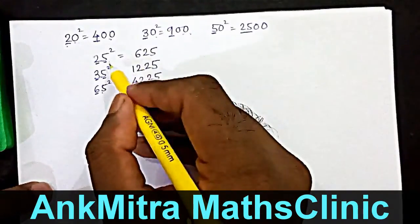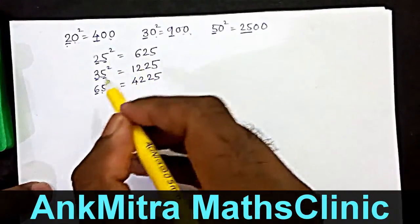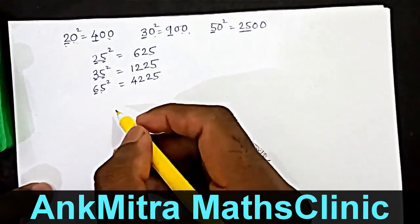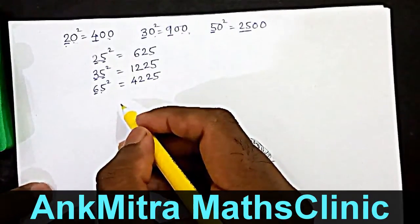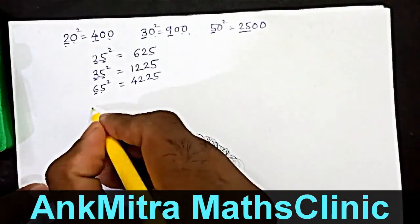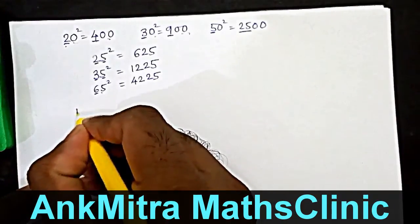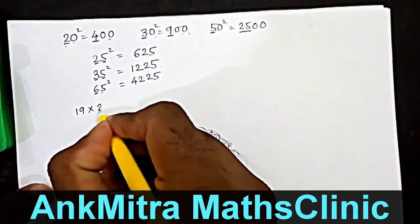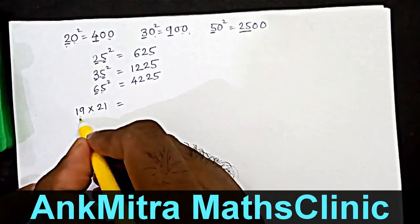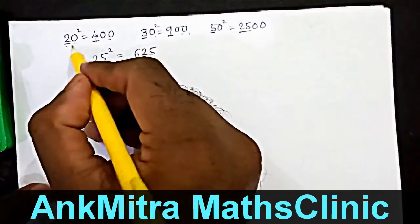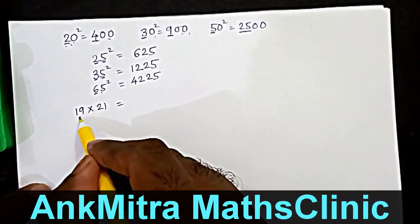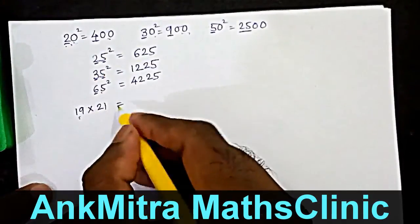Using these calculation tricks, we will now find how to multiply two numbers which are close to each other. Let's start with a very easy example. Let's say we are supposed to find what is 19 multiplied by 21. So both these numbers are close to the number 20.